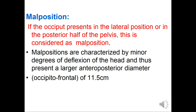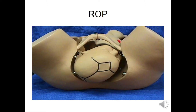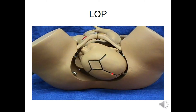Malposition is defined when the occiput presents in the lateral position or in the posterior half of the pelvis. Malpositions are characterized by minor degrees of deflection of the head and thus present a larger anteroposterior diameter — the occipitofrontal — of 11.5 cm. This is right occipital posterior, in the posterior half of the pelvis, and left occipital posterior.